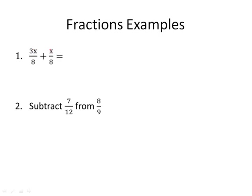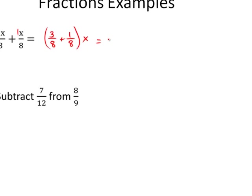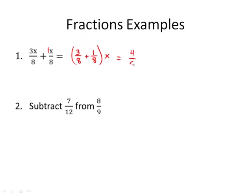Here we've actually got a like-term type question because they're both x terms. Really what we can do is combine 3 eighths plus 1 eighth — remember the coefficient is 1 if it's not written — of x. Now the denominators are the same, therefore we can just go 3 plus 1. We've got 4 eighths x. We can simplify 4 eighths: 4 and 8 both divide by 4, giving us 1 and 2. So really it's 1 half x, which can also be written as x over 2.